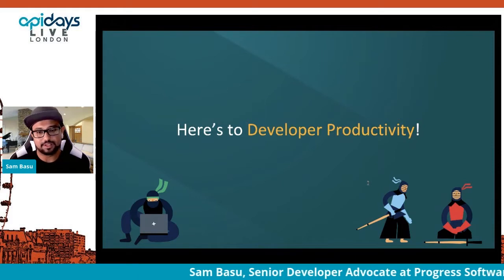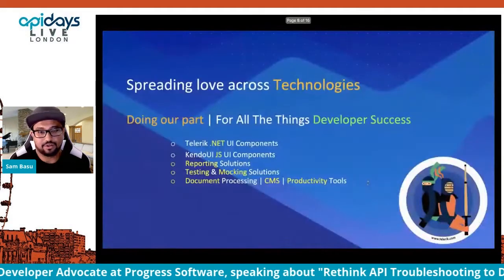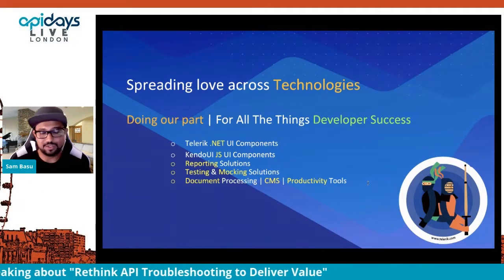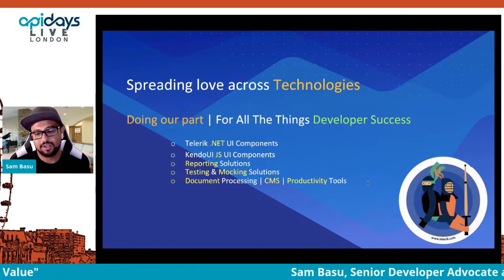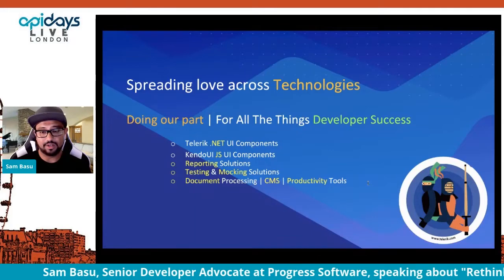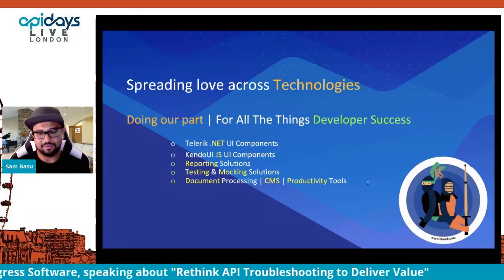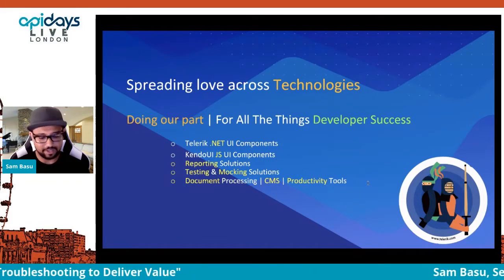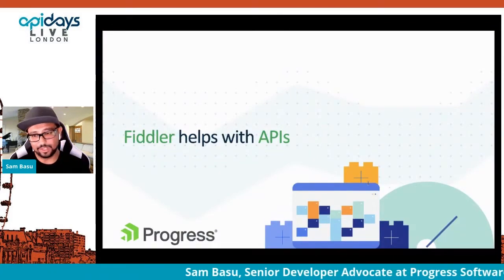I work for Progress Software and we are all about developer productivity. We have about 20 years of being in the developer space — making UI components for .NET, JavaScript, web, mobile, and desktop. We also do strong reporting solutions, testing and mocking frameworks, document processing, CMS, and lots of productivity tools — all to help you and your teams be more successful.